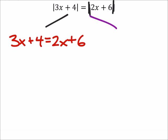On the other hand, I've got a separate second equation. I've got 3x plus 4 equals a negative 2x plus 6. Again, we're looking at the positive and negative for both of these.